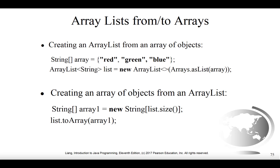You can see this happening syntactically on the slide. On the second line, we have ArrayList<String> list equals new ArrayList, and as a parameter for the constructor we put Arrays.asList and then the array. The line above defines a normal array of strings: String[] array initialized to contain three elements — the strings red, green, and blue. The next line takes that and produces an ArrayList out of it.